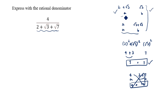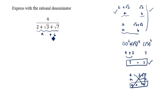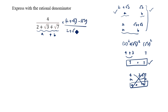So we split: a is 2 plus root 3, b is root 7. Since the denominator is a plus b, we multiply numerator and denominator by (2 plus root 3 minus root 7), which is a minus b.